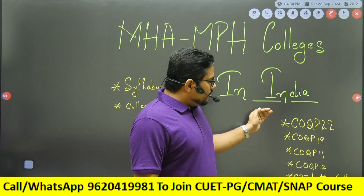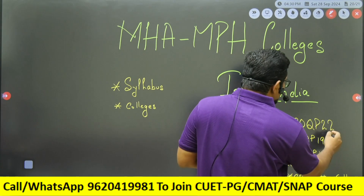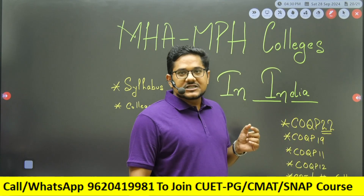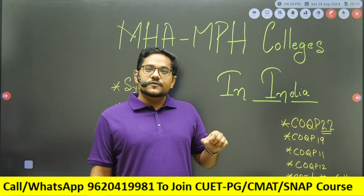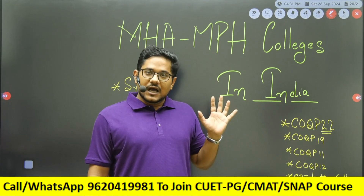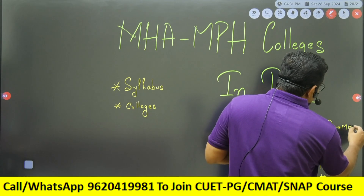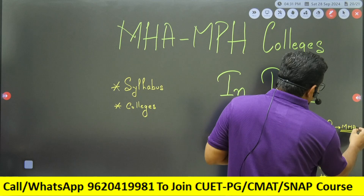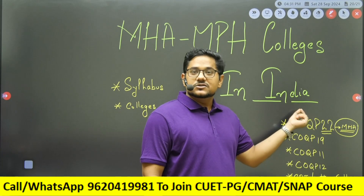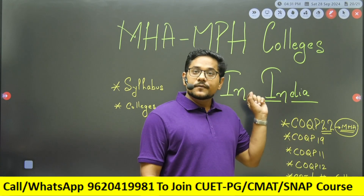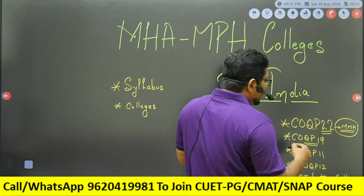There are four different paper codes. The first one is COQP 22. This is a domain-specific paper, specifically for MHA, which deals with the basics of MHA. I will show you the whole syllabus. This is the CVTPG paper code for MHA. Please note that through this paper, TISS is not taking admission — TISS admission is through the CAT exam.